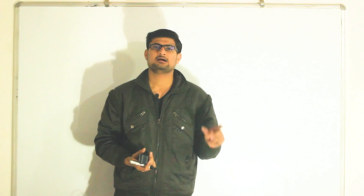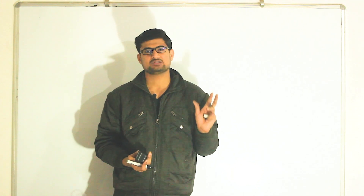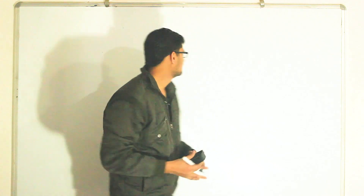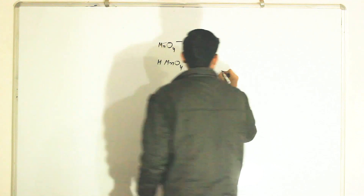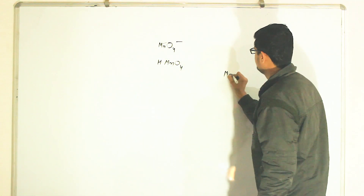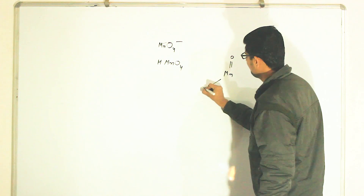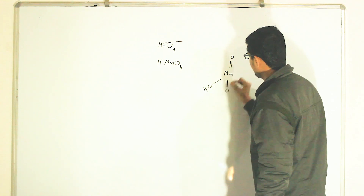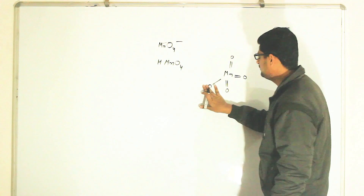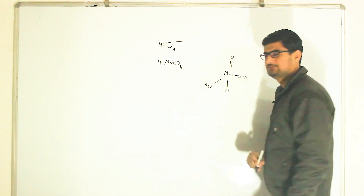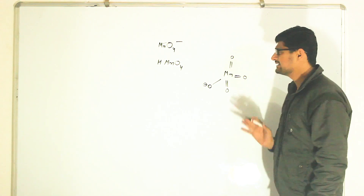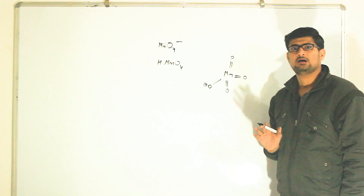If any anion is given, attach a number of hydrogen atoms equal to the charge of the anion and try to draw the structure; at last, remove the hydrogen and put a negative charge in its place. For example, if MnO4- is given, we consider HMnO4, draw the structure, and then remove the hydrogen and attach one negative charge in place of it. This is how we can draw the structure of anions.